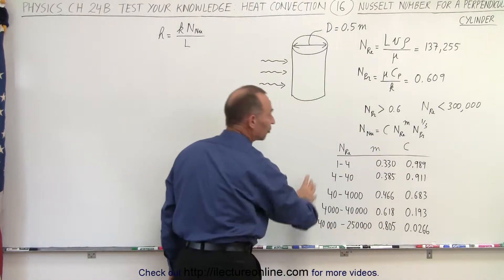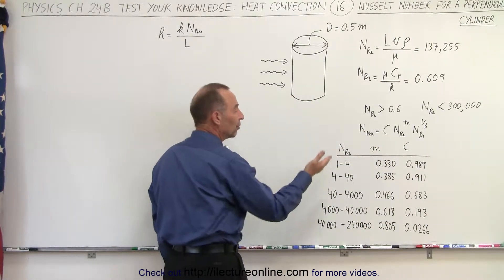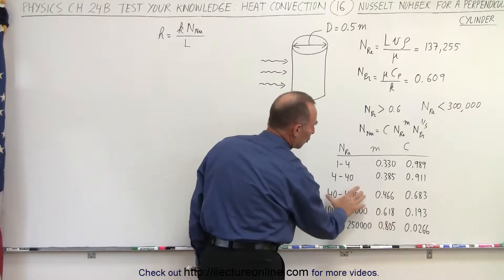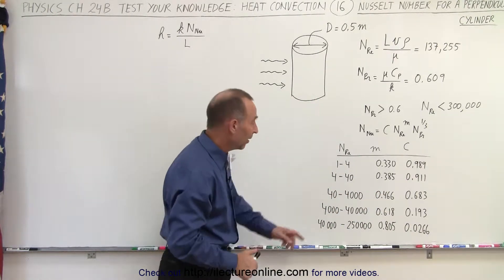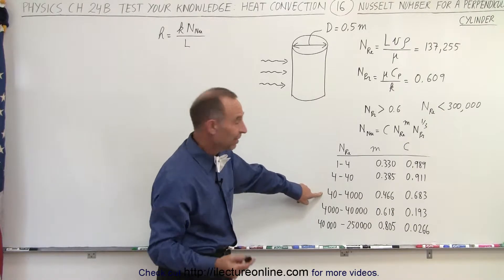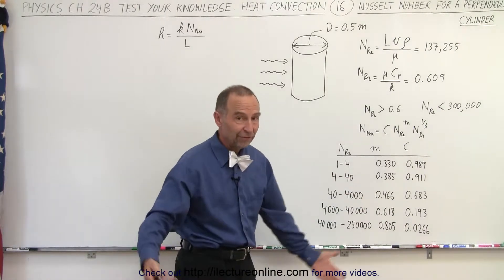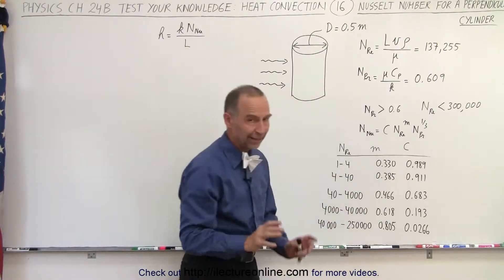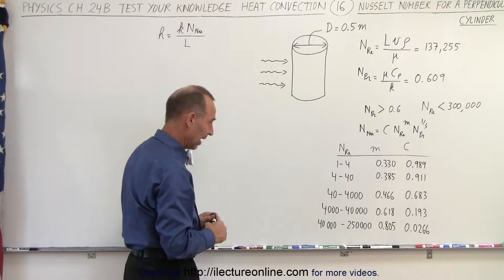Here we have a table that allows us to find some of these values. Now, of course, these values are approximate values because they're valid for a range of values. Obviously, if the Reynolds number is 50, you should get a different number than when the Reynolds number is like 3,500. But just to give you a feel, you could potentially extrapolate to get a little bit more accurate of a value.